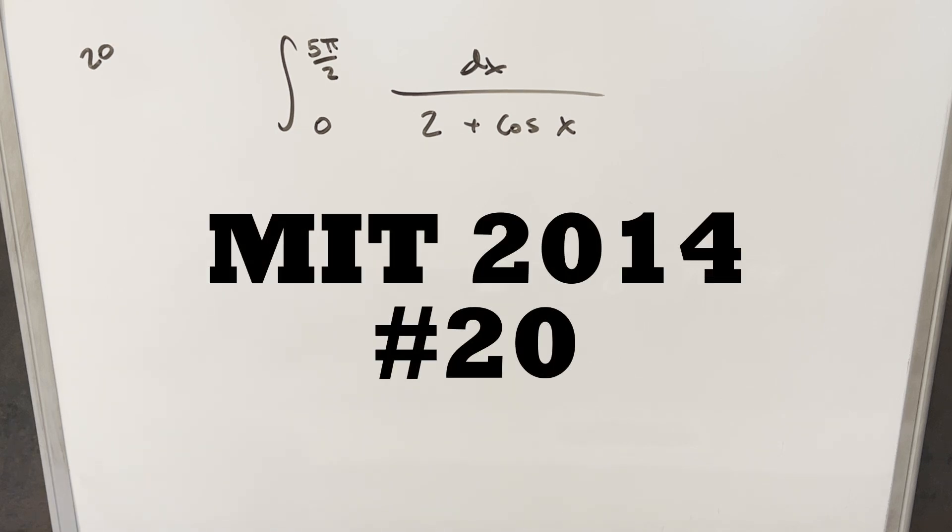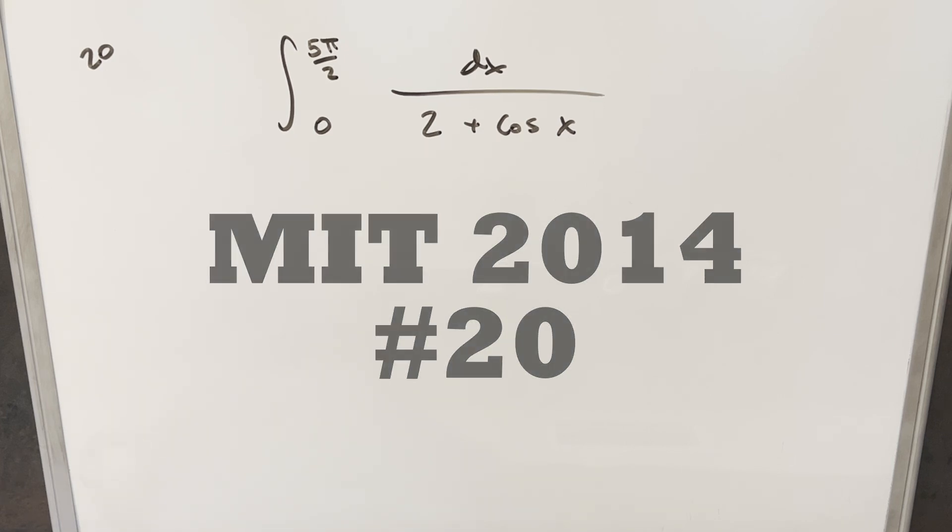Okay, we have here today an interesting integral from the MIT integration bee. It should be 2014. This is problem 20. We have the integral from 0 to 5π over 2, 1 over 2 plus cos x, dx.